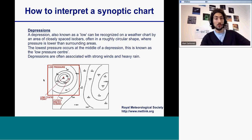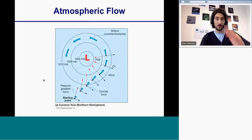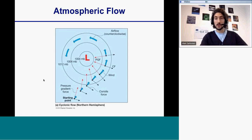This is known as the low pressure center. We are interested in low pressure because they are often associated with strong winds and heavy rain. Here is an example of the circulation associated with a low — what we call the cyclonic flow. We see that in the northern hemisphere, the low pressure goes counter-clockwise.